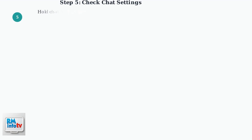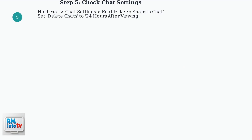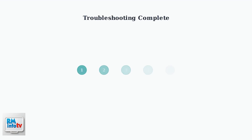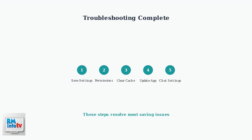Finally, check your chat settings. Press and hold on the problematic chat, tap Chat and Notification Settings, enable Keep Snaps in Chat, and set Delete Chats to 24 hours after viewing. By systematically checking these settings and following these troubleshooting steps, you can usually resolve the Snapchat Can't Save Snap in Chat issue.